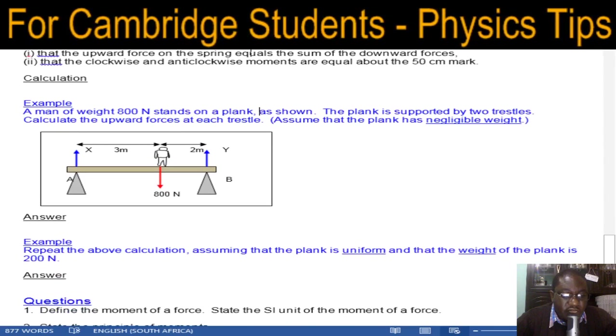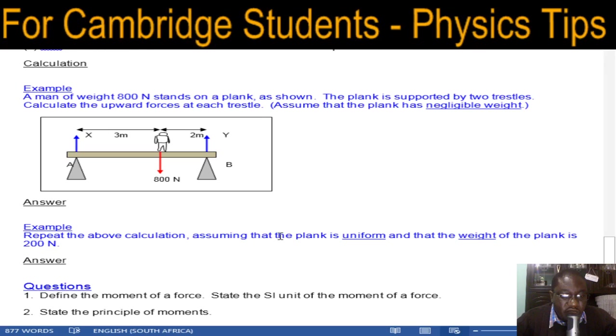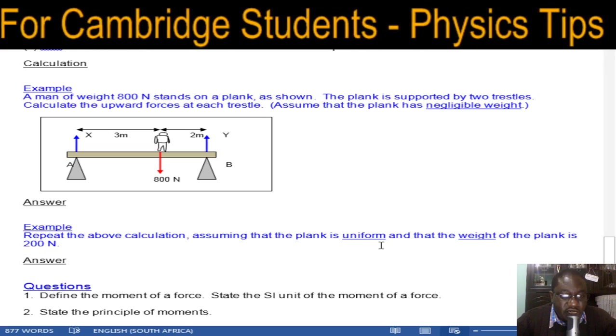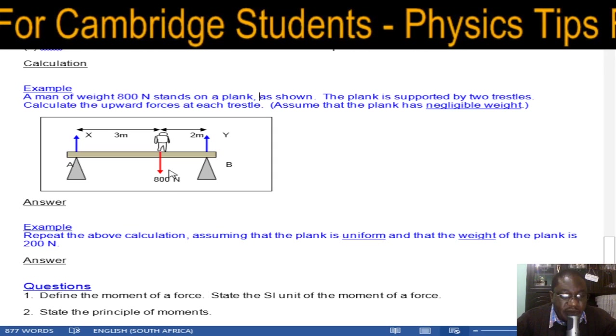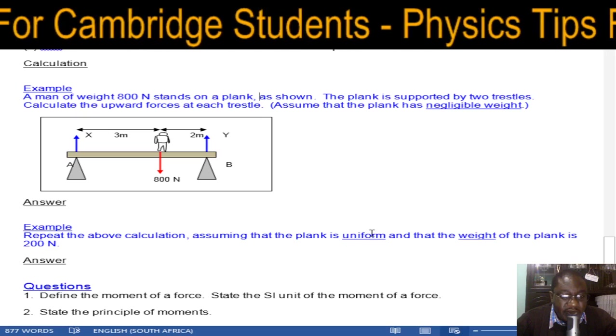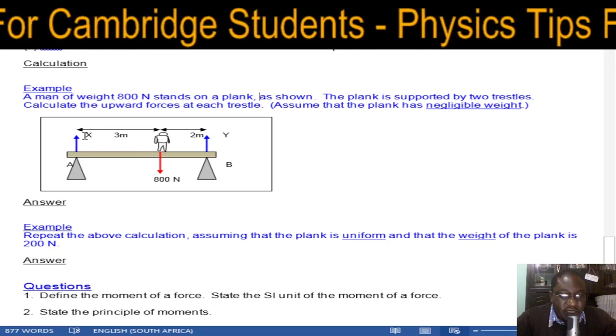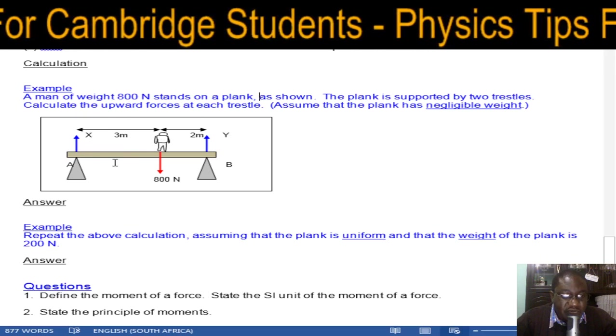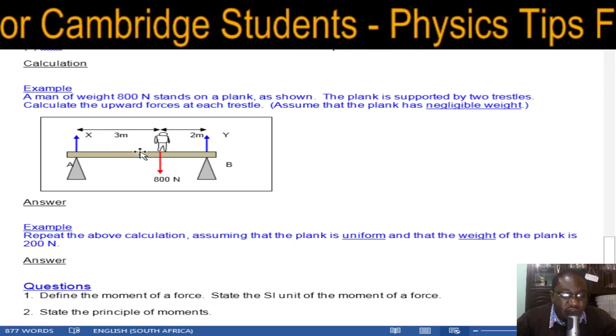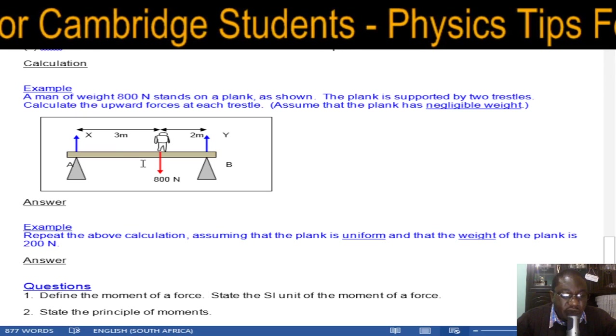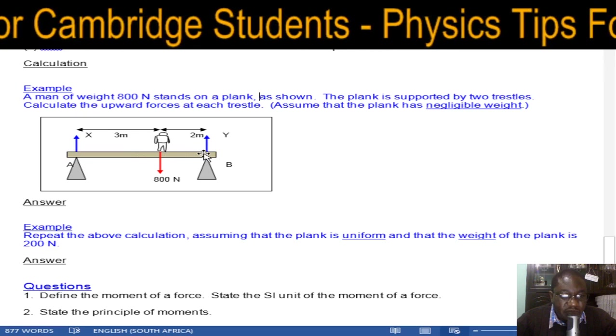In the second case, repeat but now take into consideration the weight of the plank. Since this is a uniform plank, the weight acts at the center, so it will be at the two and a half meter mark. You've got to consider the moment of the weight of the metal, so it is the weight of the metal times this distance from the pivot, which is 2.5.